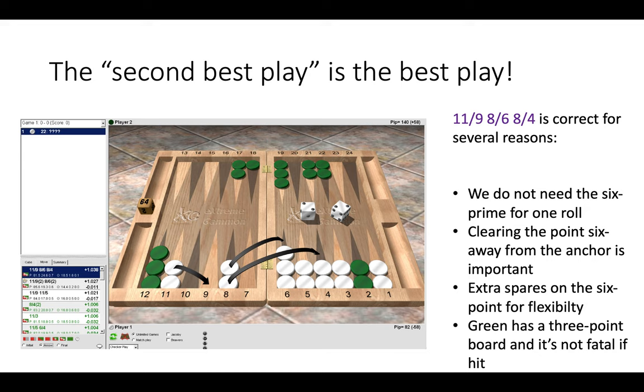By making this play, we also have an extra spare on the six point, which means we can play those forward with fives and threes and twos and so on. So that increases our flexibility. And finally, green has a three-point board, so it's not fatal if we're hit.